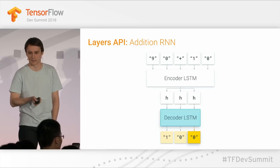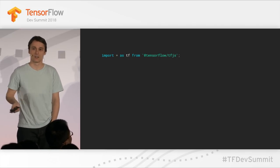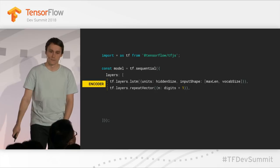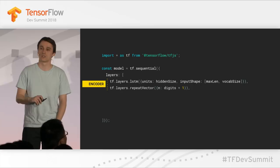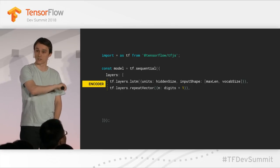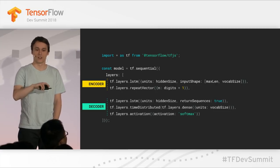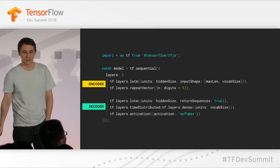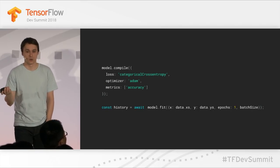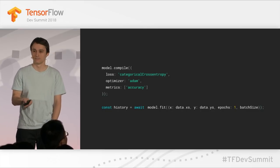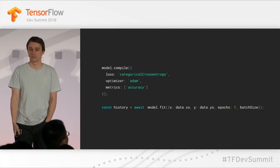This may sound a little complicated, but with the Layers API it's not that many lines of code. We have our import of tf from TensorFlow.js. We have our sequential model — a stack of layers. For those familiar with TF layers in Python or Keras, this API looks very familiar. The first two layers are the encoder; the last three layers are the decoder. We then compile it with a loss, an optimizer, and a metric we want to monitor like accuracy, and we call model.fit with our data.